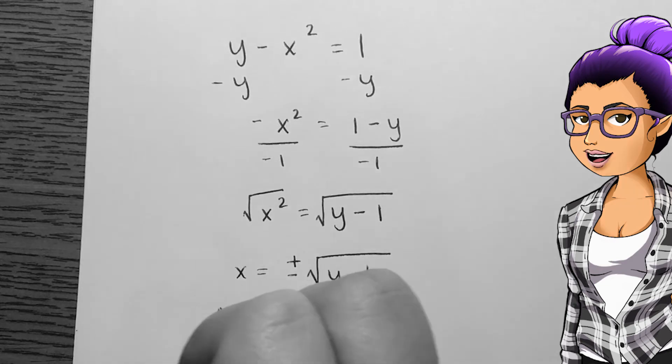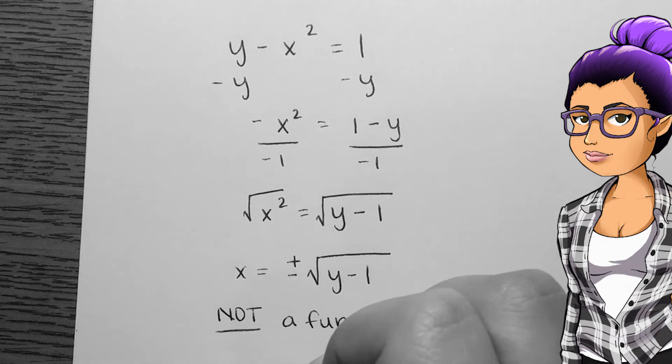But that means that when I decide on an input for y, say 3, I have two different outputs, which is not allowed according to my function definition.